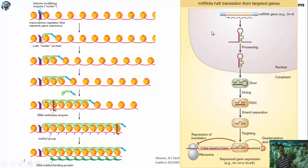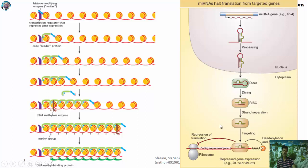miRNA (micro RNA), also called interfering RNA or silencing RNA, inhibits gene expression. When miRNA exits the nucleus, it binds to a protein called Dicer, which processes it. It then associates with the RISC complex, which removes the inhibitory strand and frees the mature miRNA. This mature miRNA binds to its target mRNA, preventing its expression — that is how miRNA silences gene expression.